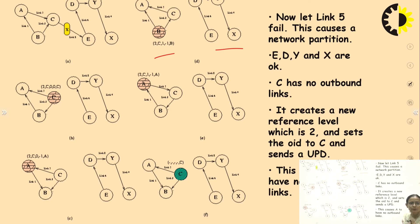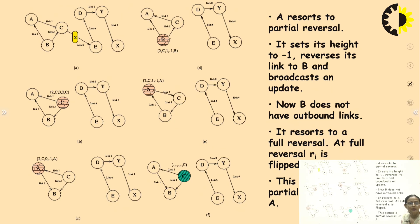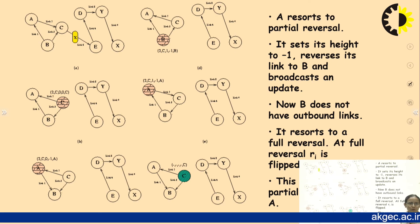A resorts to partial reversal. It sets its height to minus 1, reverses its link to B and broadcasts an update. Now B does not have an outbound link, so it resorts to a full reversal. At full reversal, ri is flipped. This causes a partial reversal at node A.